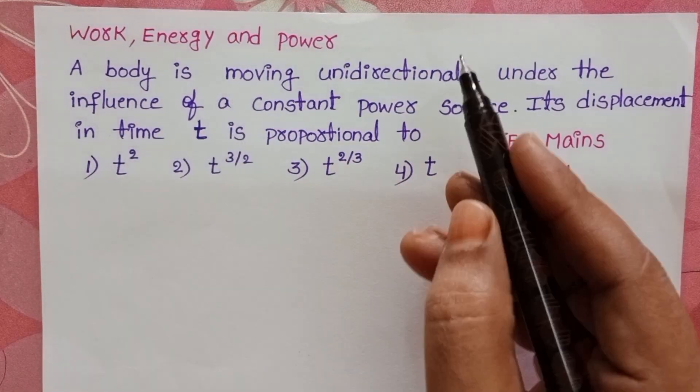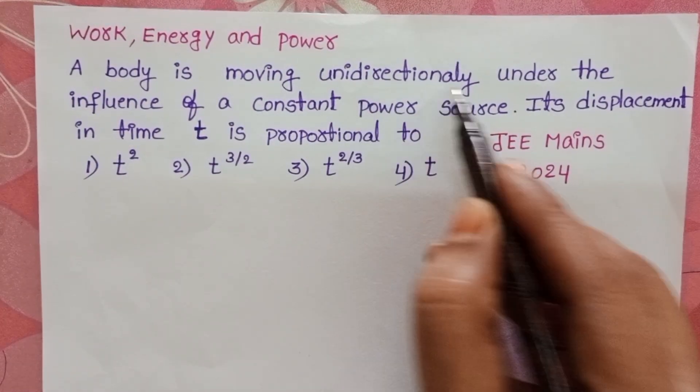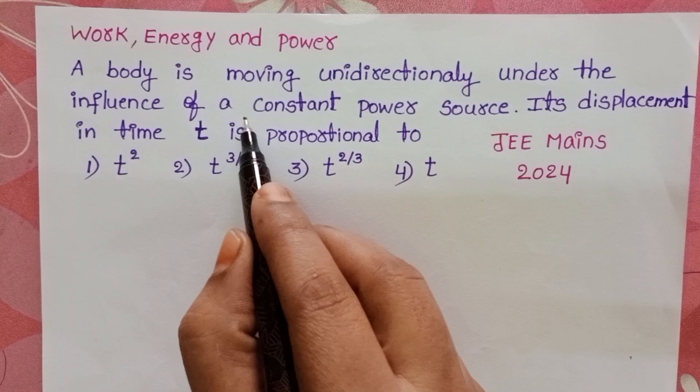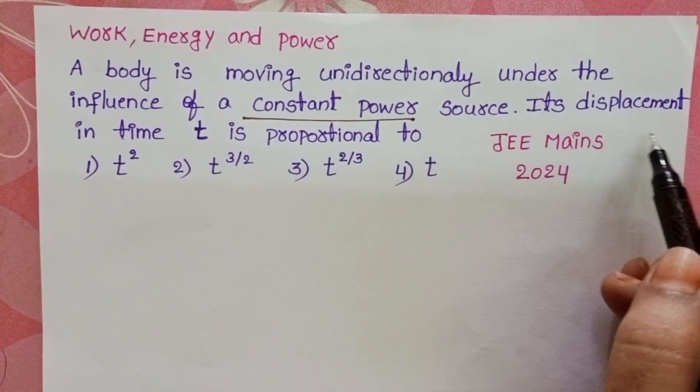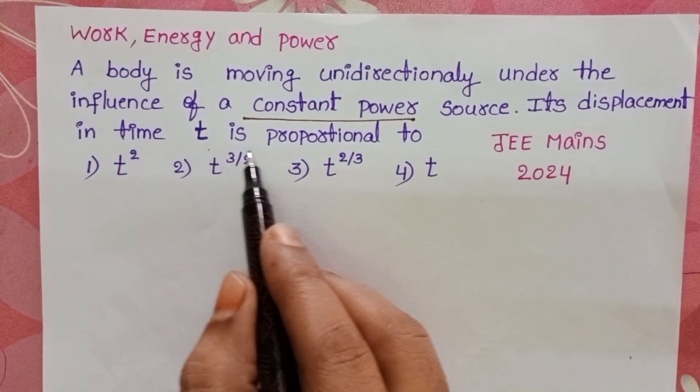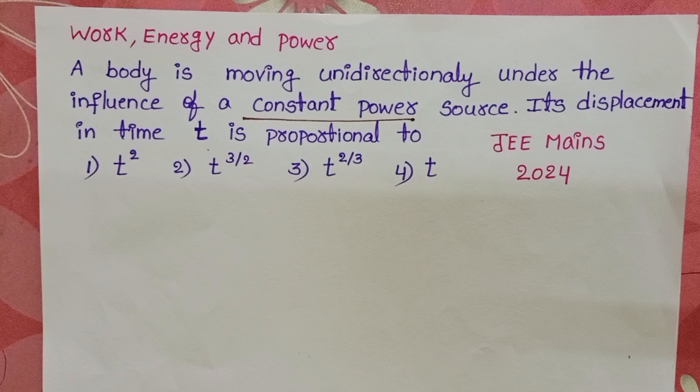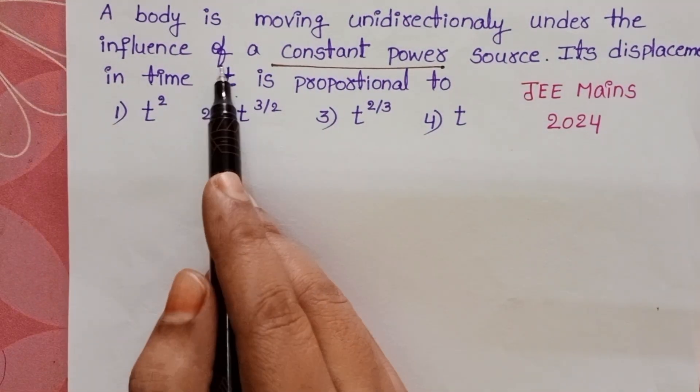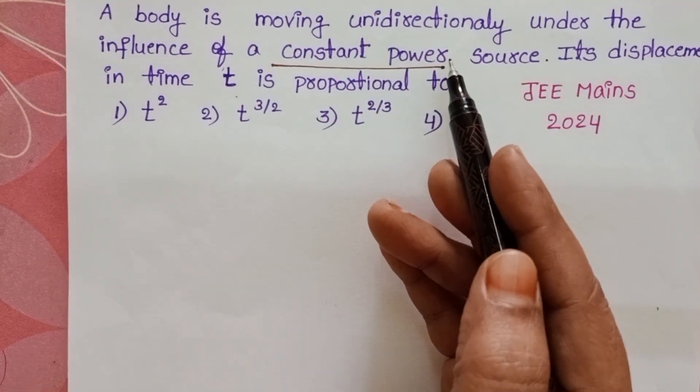A body is moving unidirectionally under the influence of constant power. Its displacement in time t is proportional to. In this question, power is constant.